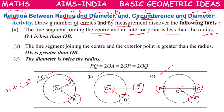The distance from the center of the circle to a point on the circle is called the radius. The line joining the center to an interior point is always less than the radius. This fact we have observed from the first diagram.